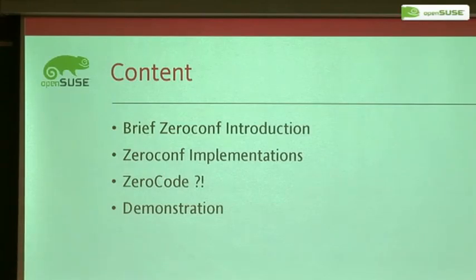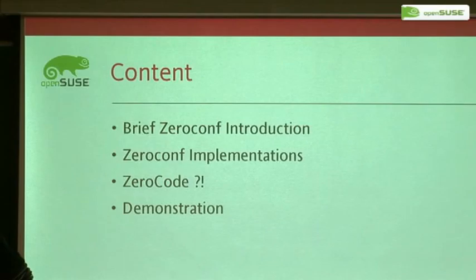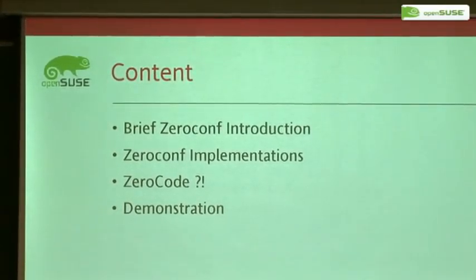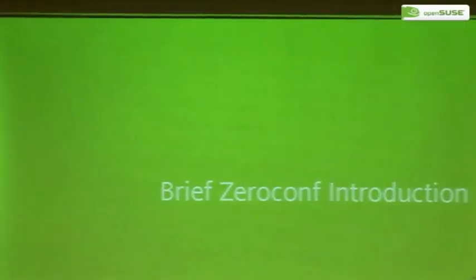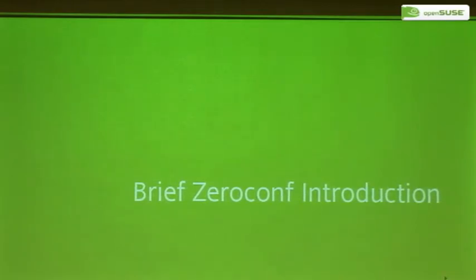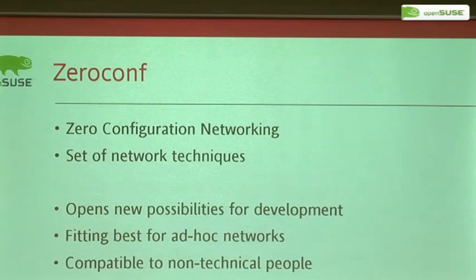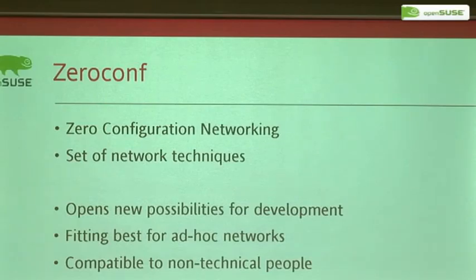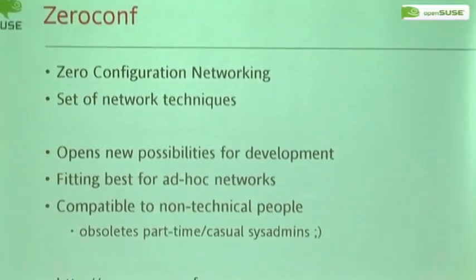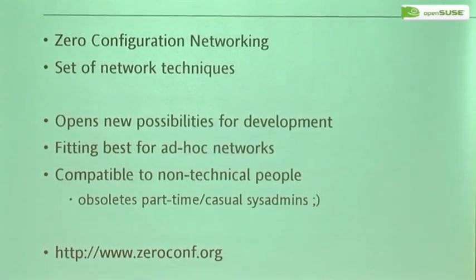I will introduce some zero-conf implementations. The big question: what do you have to do to write zero-conf applications? It's not done with zero code, unfortunately. And then we give some more demonstration — not only to two people, but there's more fun stuff. Demo will probably be the biggest part of our talk. Zero-conf, also called Zero Configuration Networking, is a bundle of network techniques to make it easy to write network applications and just not care about things like IP versus subnet mask. As you saw in the nice application here, it opens new possibilities for developers. The main idea is to think more network — to give your application network wings.